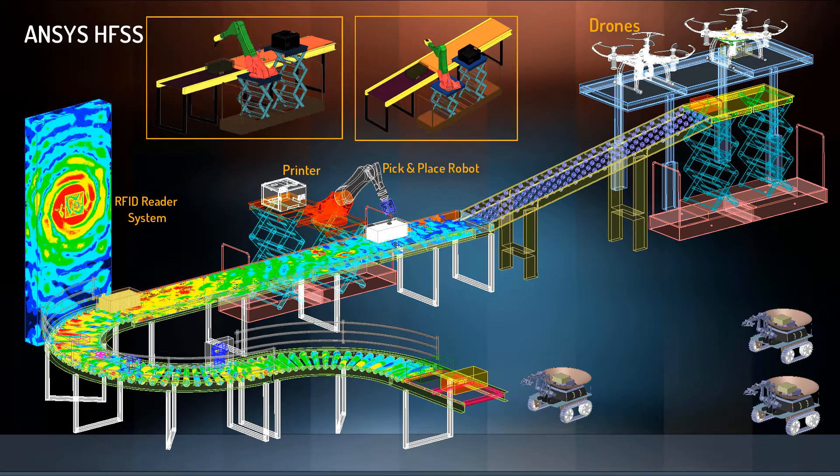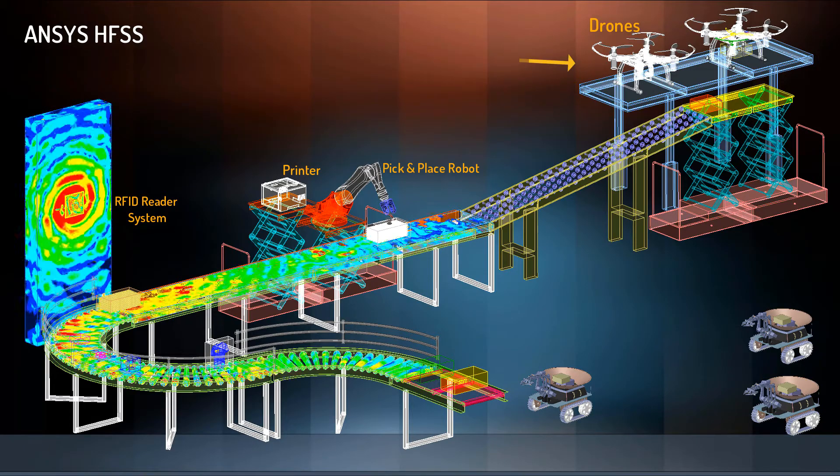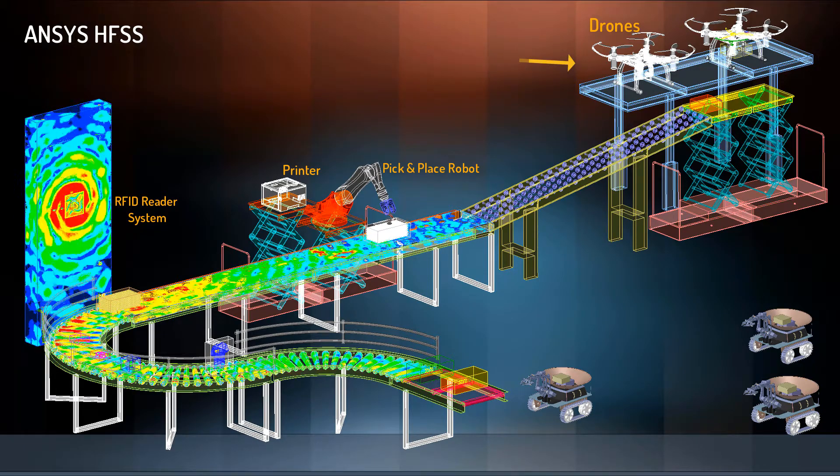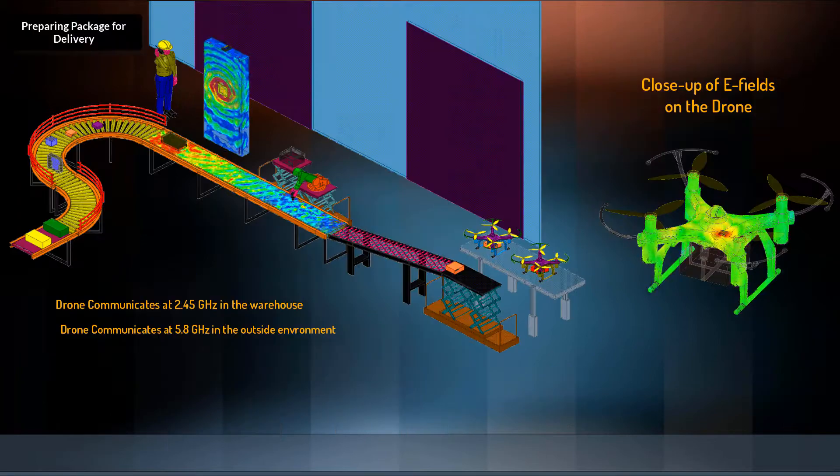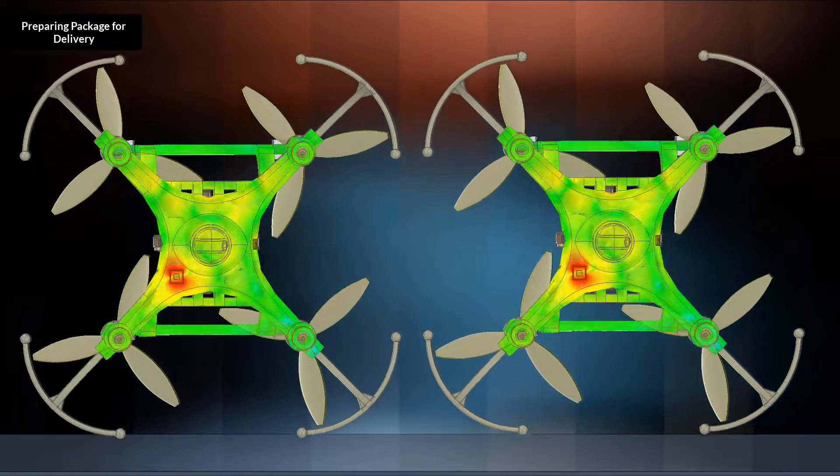Another pick and place robot fixes the label on the package. The drone makes its way to pick up the package for delivery, communicating with the warehouse at 2.45 GHz and the outside environment at 5.8 GHz. Its GPS antenna operates at 1.575 GHz.